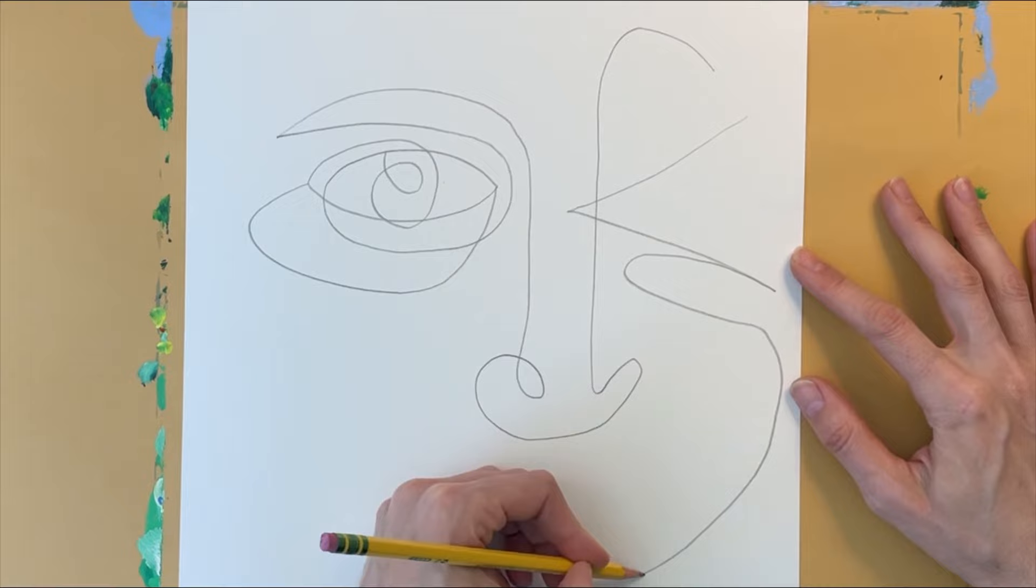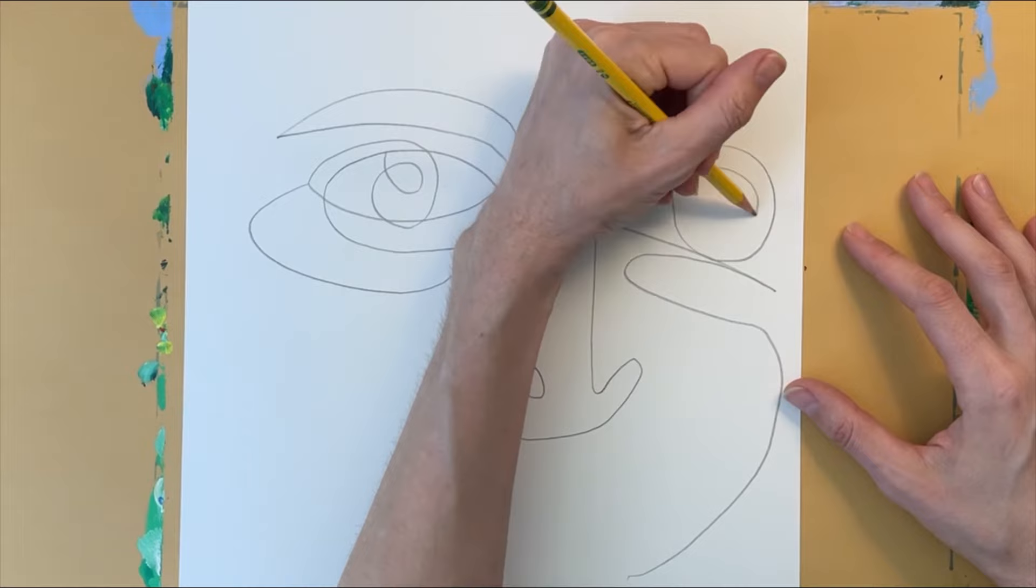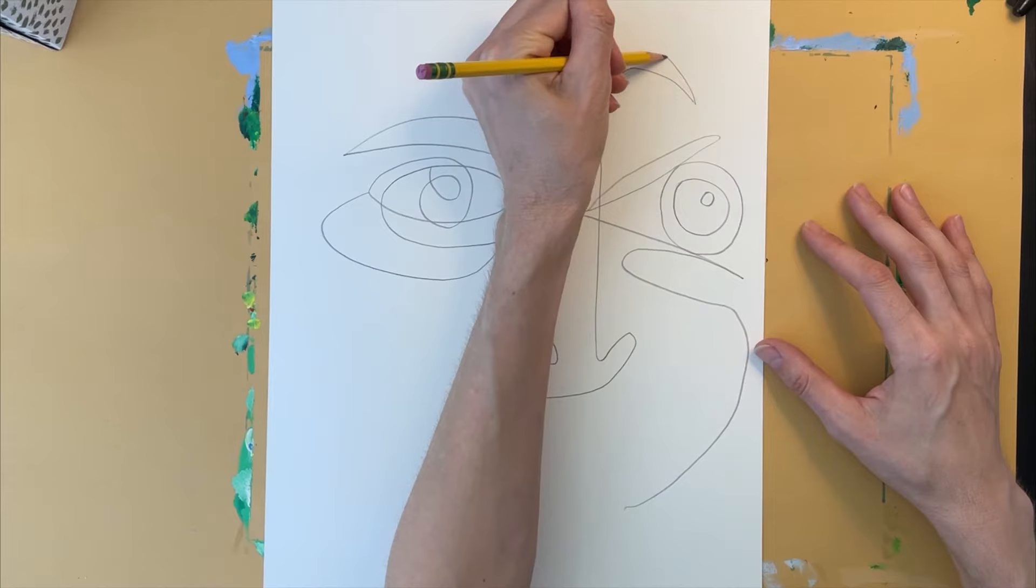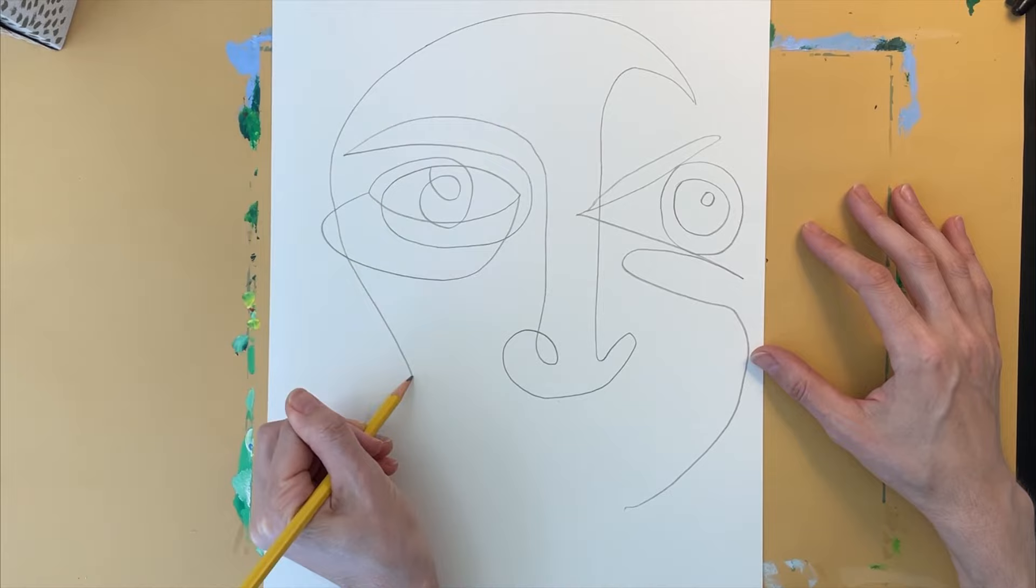A circle for the iris, a circle for the pupil, and a small circle that will stay white. I'm adding a round forehead above the eyebrow. See how my lines intersect with each other? Now for the chin and some big lips.